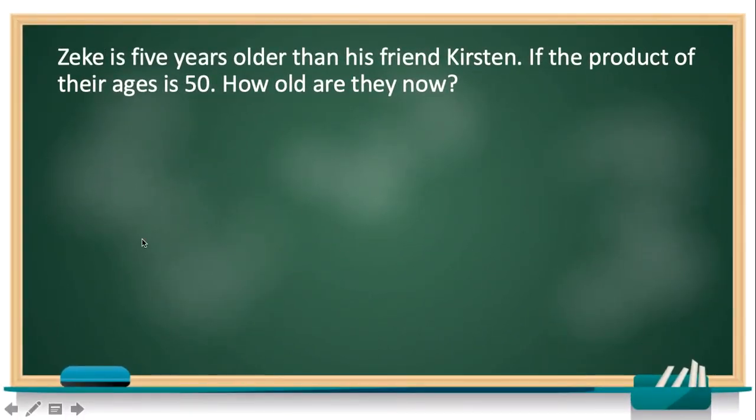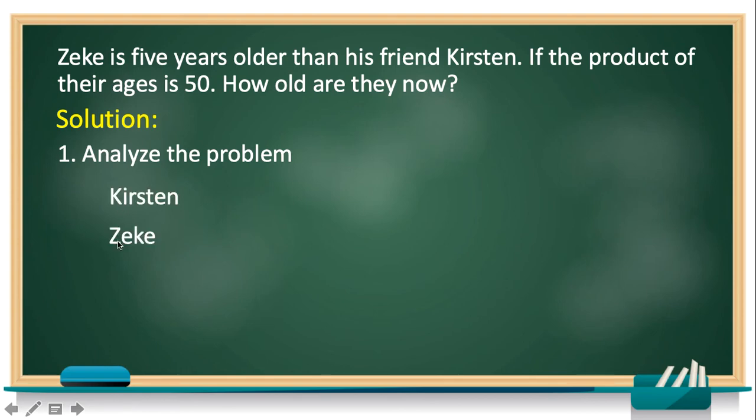Let's have another example. Zicky is 5 years older than his friend Kirsten. If the product of their ages is 50, how old are they now? Again, let's start by analyzing the problem and still apply the block method. We have Kirsten and Zicky with the same size of blocks. And looking at the problem, Zicky is 5 years older, so we need to add another small block to Zicky to represent the additional value of his age, which is 5. To represent them, we say Kirsten is X and Zicky is X plus 5. And again, stated in the problem that the product of their age is 50.